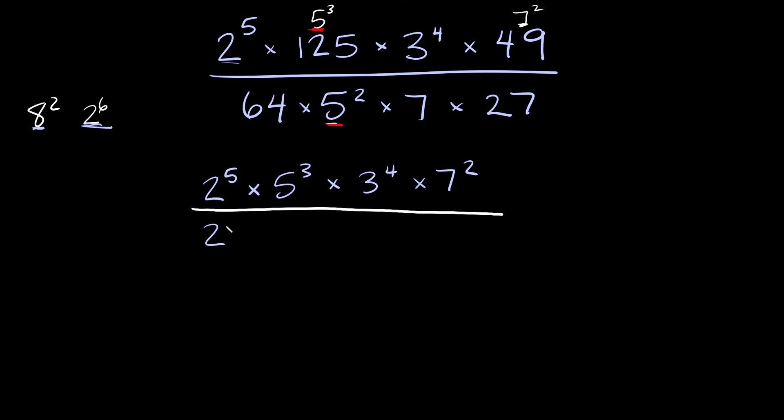So 2 to the sixth and then times 5 squared and then times 7 times 27 and 27 we can rewrite as 3 cubed. This is gonna be helpful because we'll have a 3 there and we already have a 3 on top so we'll rewrite that as 3 cubed.